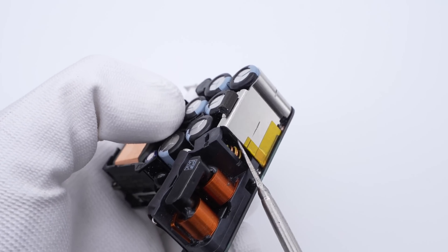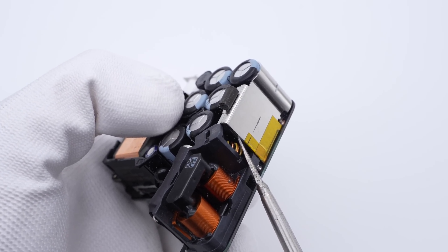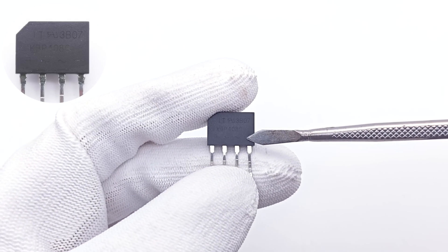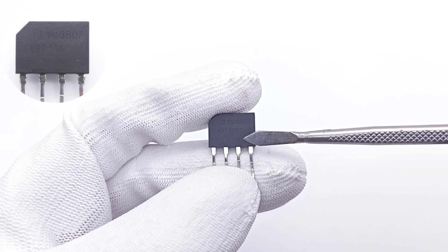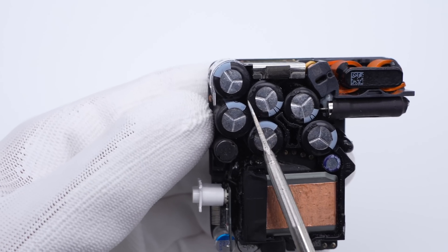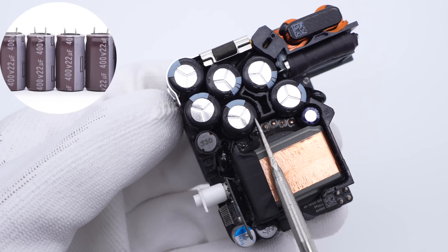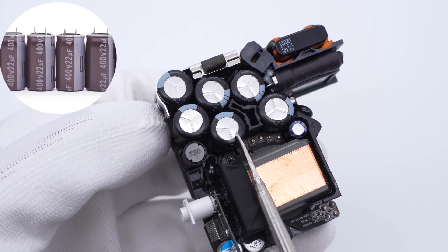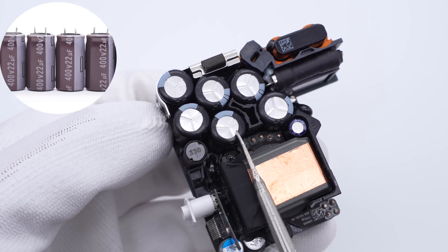The bridge rectifier is under this heat sink to dissipate heat quickly. Model is KBP408G, 800V, 4A. Those six electrolytic capacitors for input filtering are from Nichicon. They are connected in parallel and 400V, 22μF for each, 132μF in total.